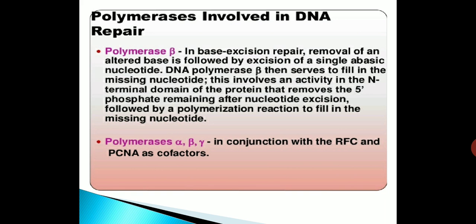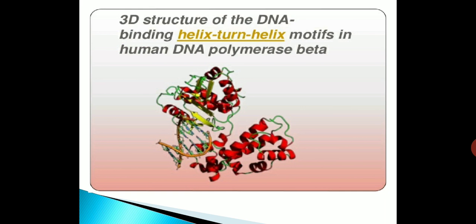Polymerases alpha, beta, and gamma function in conjunction with RFC and PCNA as cofactors. A diagram showing the 3D structure of DNA binding via alpha-turn-helix motifs in human DNA polymerase beta is shown here.